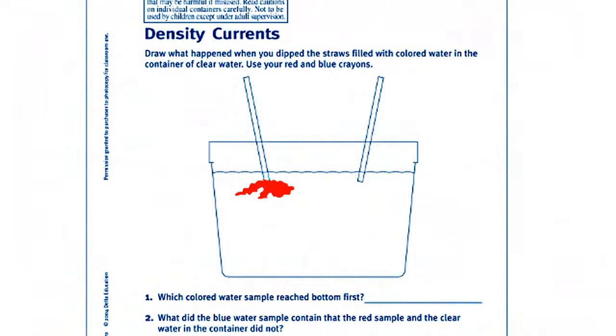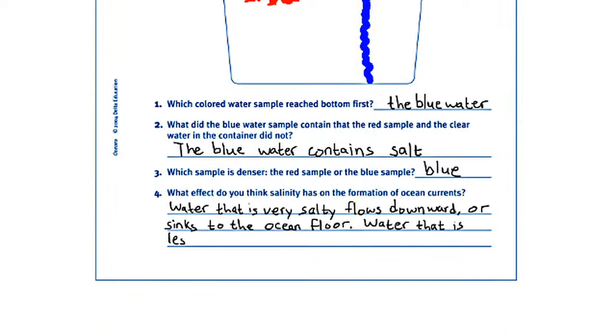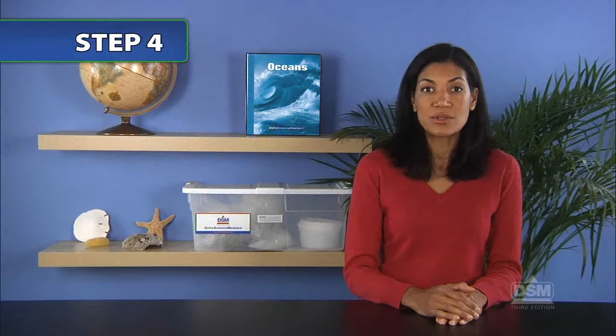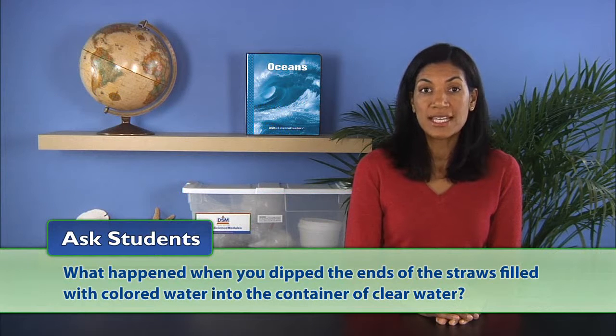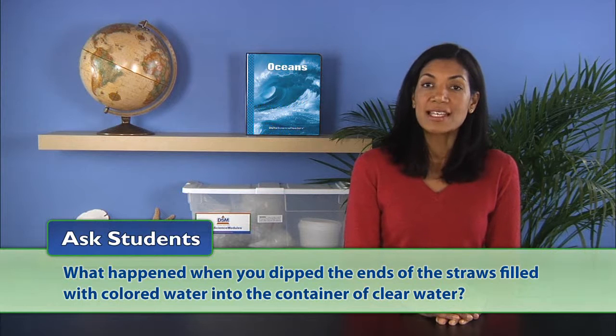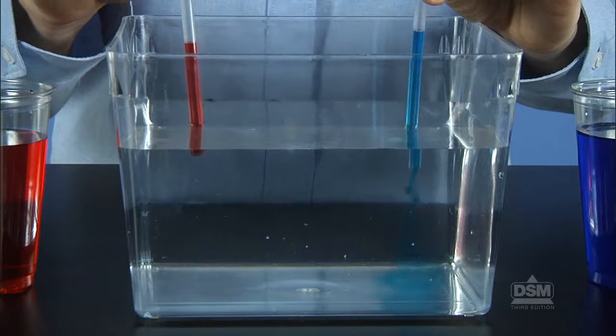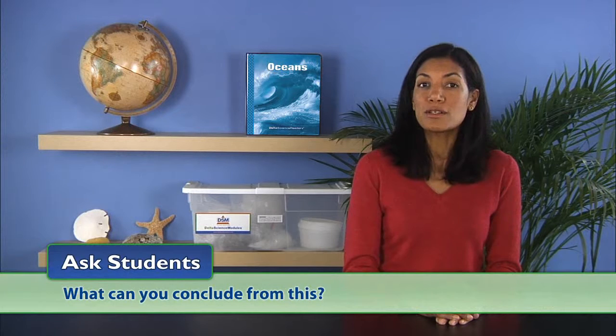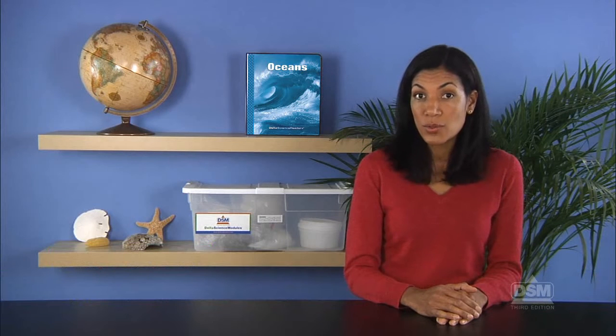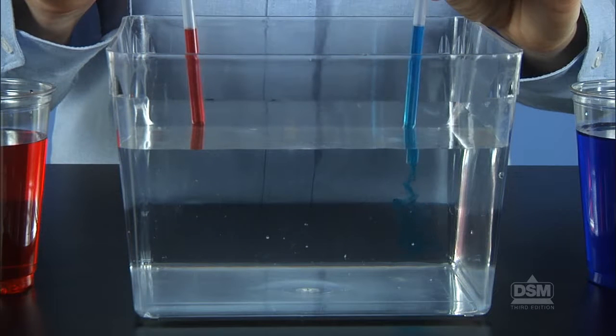Instruct students to use the crayons to draw their observations on their Activity Sheets and answer questions one through four. When all teams have finished, ask students what happened when you dipped the straws filled with colored water into the container of clear water. Guide students to understand that both straws began leaking colored water, but not at the same rate. The blue colored water quickly poured out of the straw and sank to the bottom of the container. Remind students that the blue water contained salt and the red water did not. Ask what can you conclude from this. Students already know that the saltier the water is, the denser it becomes. They should therefore conclude that denser water is heavier and therefore sinks.